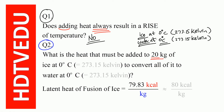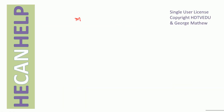What is the heat that must be added to 20 kg of ice at 0 degree Celsius (273.15 Kelvin) to convert all of it to water at 0 degree Celsius without a change of temperature? The mass is 20 kg, and the latent heat of fusion is 80 kilocalories per kg.